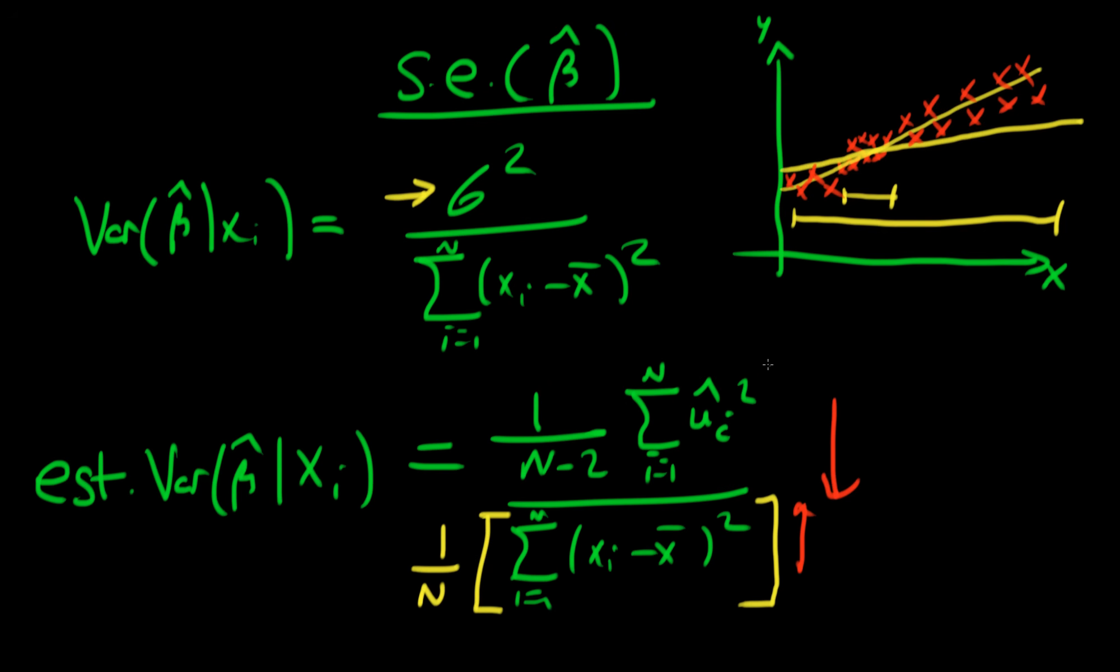What's the intuition behind the numerator? These u hat are essentially the residuals. What do residuals measure? They measure how well your model is fitting the data.